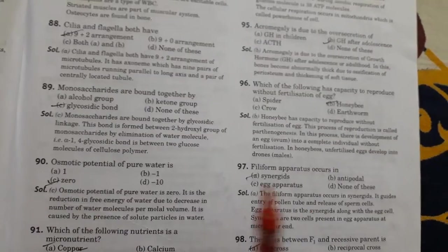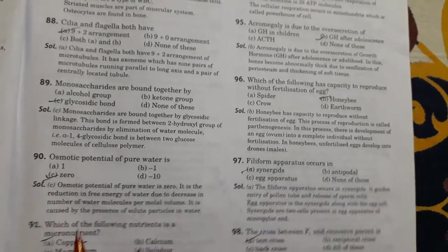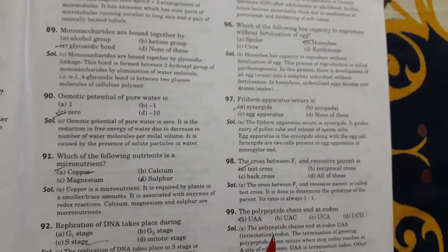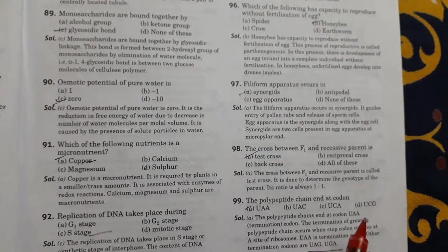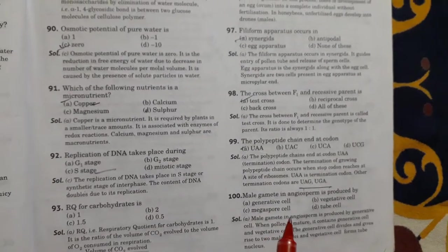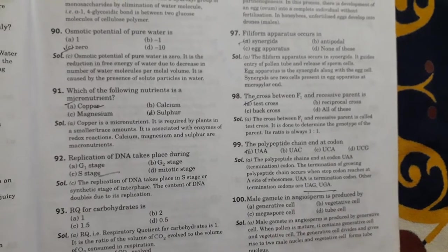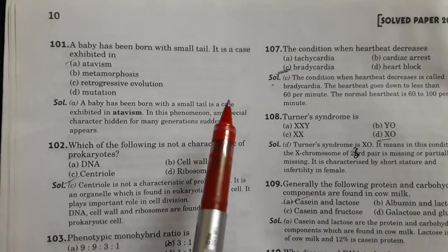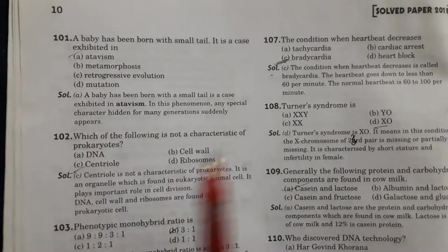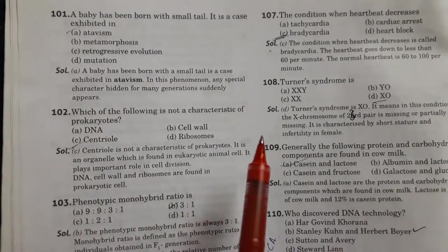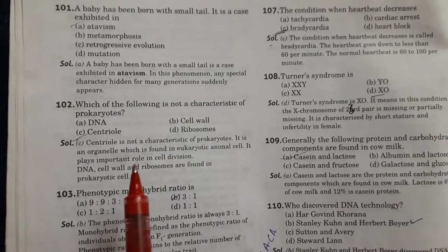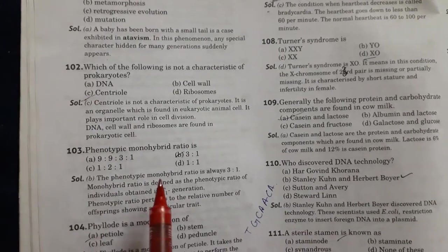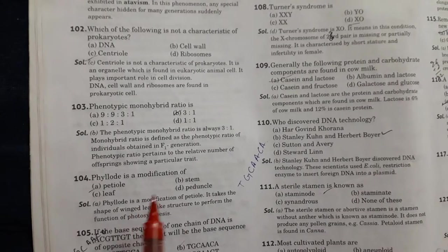Next question is which of the following has capacity to reproduce without fertilization of egg. So this is honey bee. Next is filiform apparatus occur in synergids. Next is the cross between F1 and recessive parent is called test cross. Next question is the polypeptide chain ends at codon UAA. The next question is male gamete in angiosperm is produced by generative cell. Option A is right. Next question is a baby has been born with small tail, it is a case exhibited in atavism. Option A. Then which of the following is not a characteristic of prokaryote. So centriole is not a characteristic of prokaryote. This is present in eukaryotic. Then phenotypic monohybrid ratio is 3 ratio 1. Next phyllode is a modification.